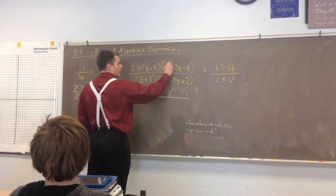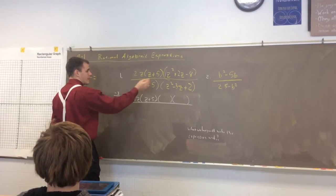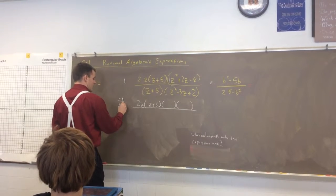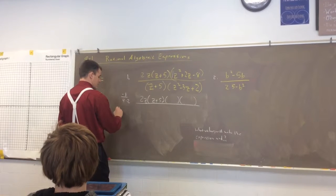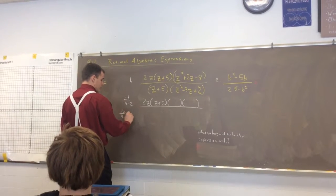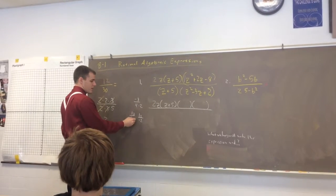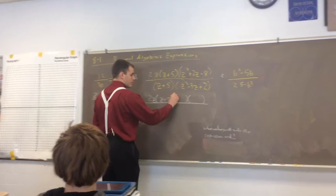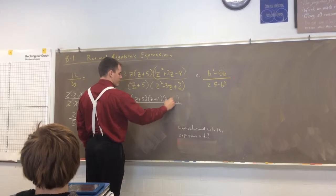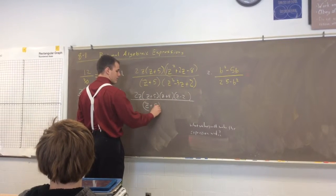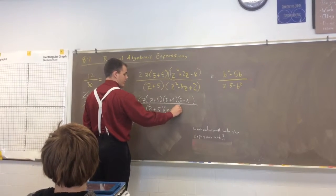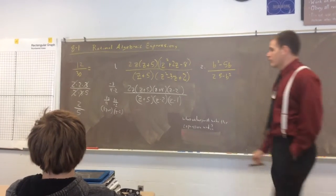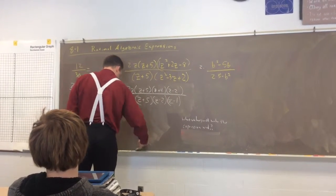So, if I do my method, 1 times negative 8 is negative 8. What factors of negative 8 add up to 2? Negative 2 times 4. So, it's going to be 1z over 4, 1z over negative 2. So, it's z plus 4 and z minus 2. Do the same thing for the bottom. So, it's z minus 2 and z minus 1. Now, before we cancel, question.